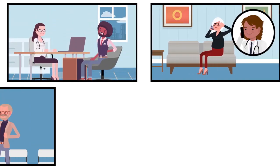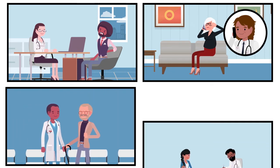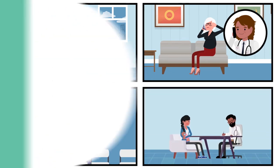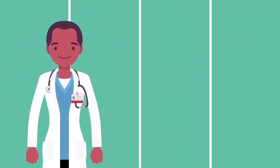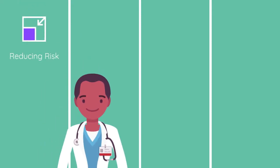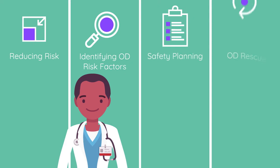Discussing overdose prevention may be uncomfortable, but it is important and represents high quality care. Four key strategies will be covered in this video: reducing risk for developing an opioid use disorder and reducing the risk of opioid misuse while properly managing chronic pain; identifying overdose risk factors; safety planning; and overdose rescue preparation.